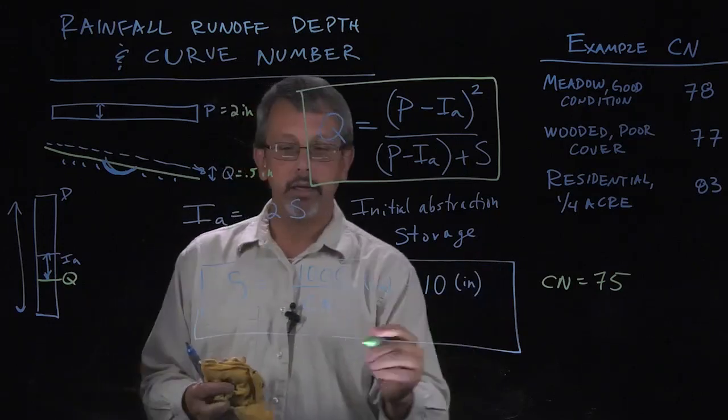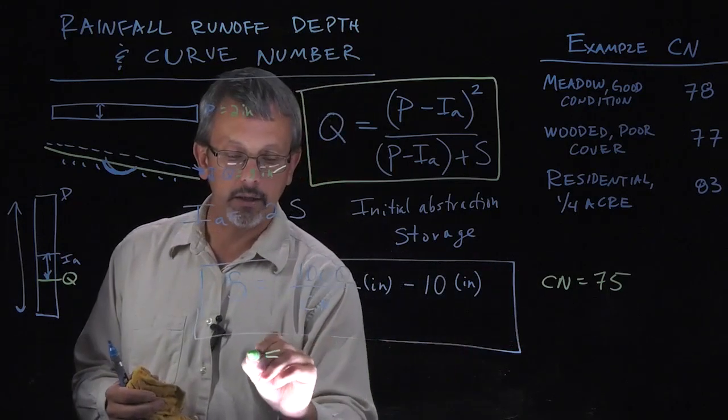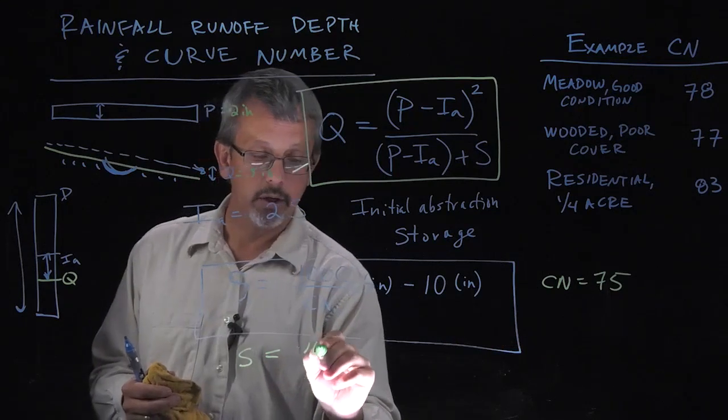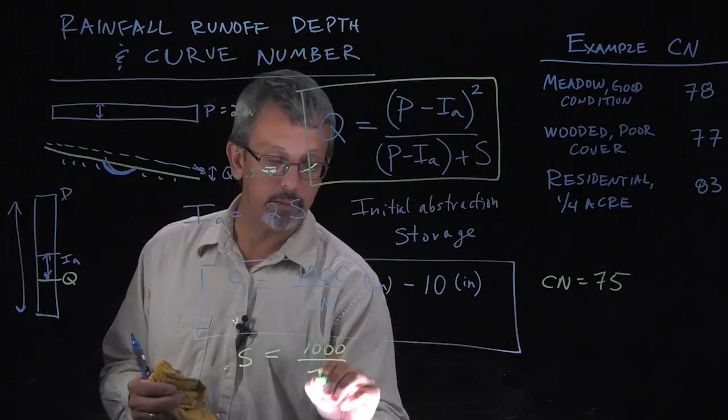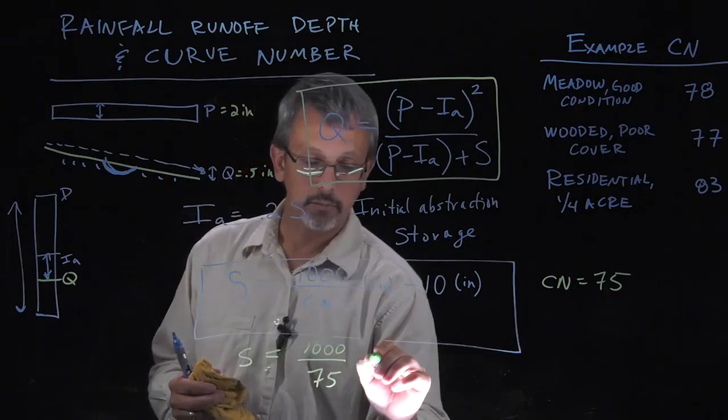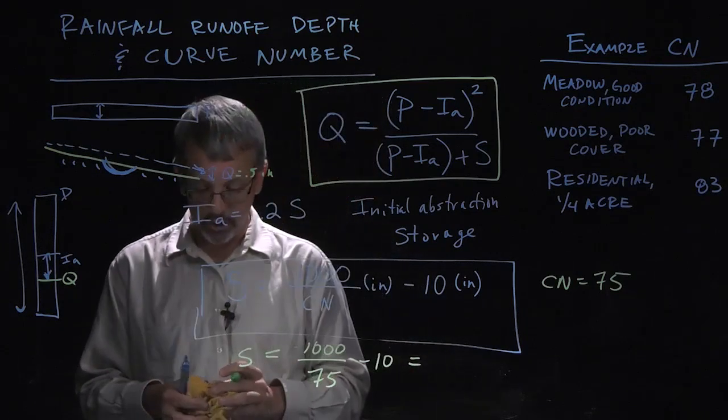If I put that curve number in here, I get a storage value of 1000 divided by 75 minus 10, and that's going to be in units of inches.